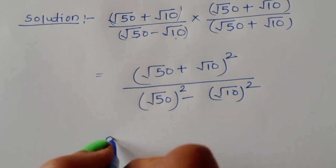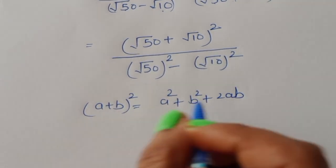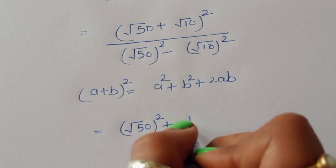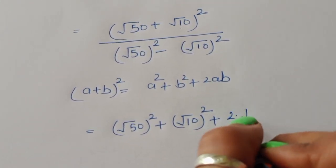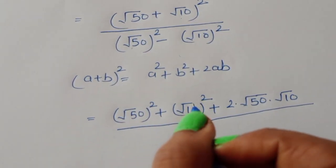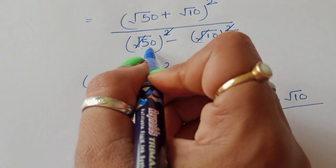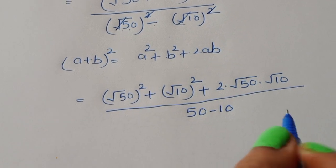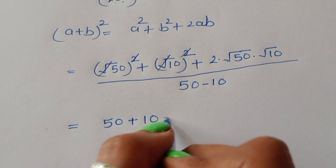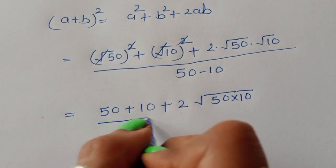For the numerator, we apply the formula: a plus b whole square equals a squared plus b squared plus 2ab. So the numerator becomes square root of 50 whole square, plus square root of 10 whole square, plus 2 times square root of 50 times square root of 10. In the denominator, a squared minus b squared: the square cancels from the square root, giving us 50 minus 10.